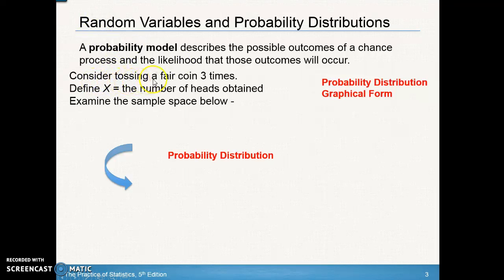Let's consider tossing a fair coin three times. Let's say that X is the number of heads obtained. So X is our random variable — we're defining what we want it to be when we toss the fair coin three times. It's the number of heads that we obtain.